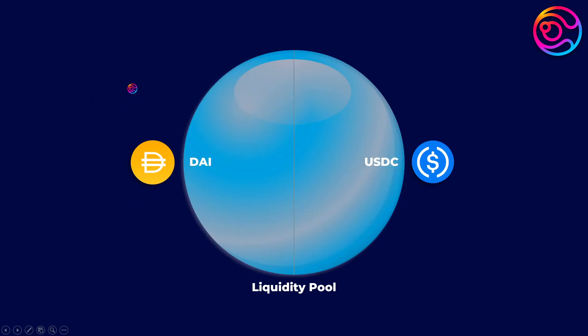This is easiest to visualize with a stablecoin pair, such as DAI and USDC. The reality is that generally, these stablecoins only trade within a price range of between $0.99 and $1.01. This also means that liquidity within the price range of $0.99 and $1.01 is going to earn the most trading fees.